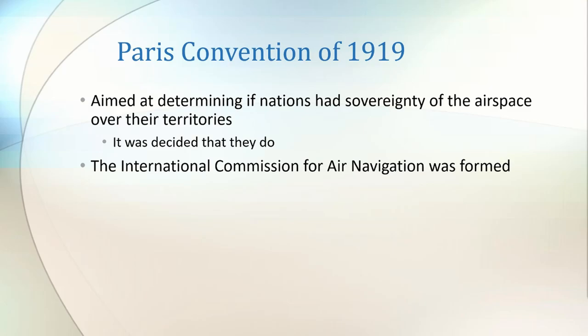There were 26 nations that signed the treaty at the Paris Convention of 1919, including the British Empire, China, France, Japan and Italy. The outcome of the Convention was that each nation has absolute sovereignty over the airspace overlying its territories and waters. This Convention also saw the creation of the International Commission for Air Navigation.